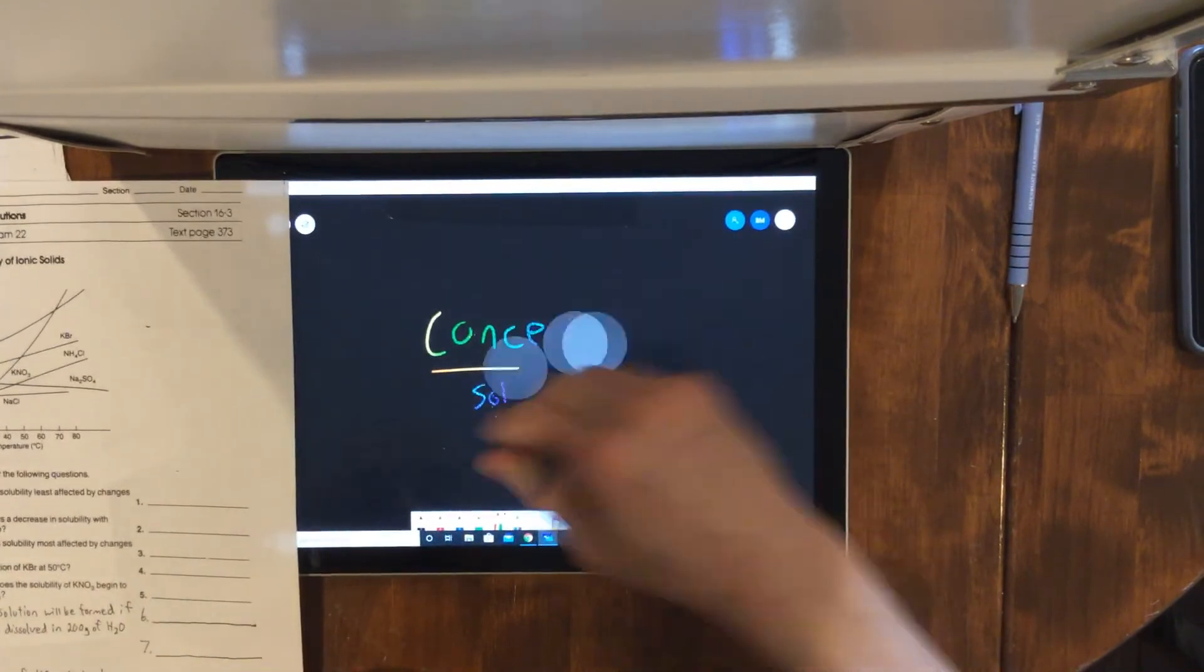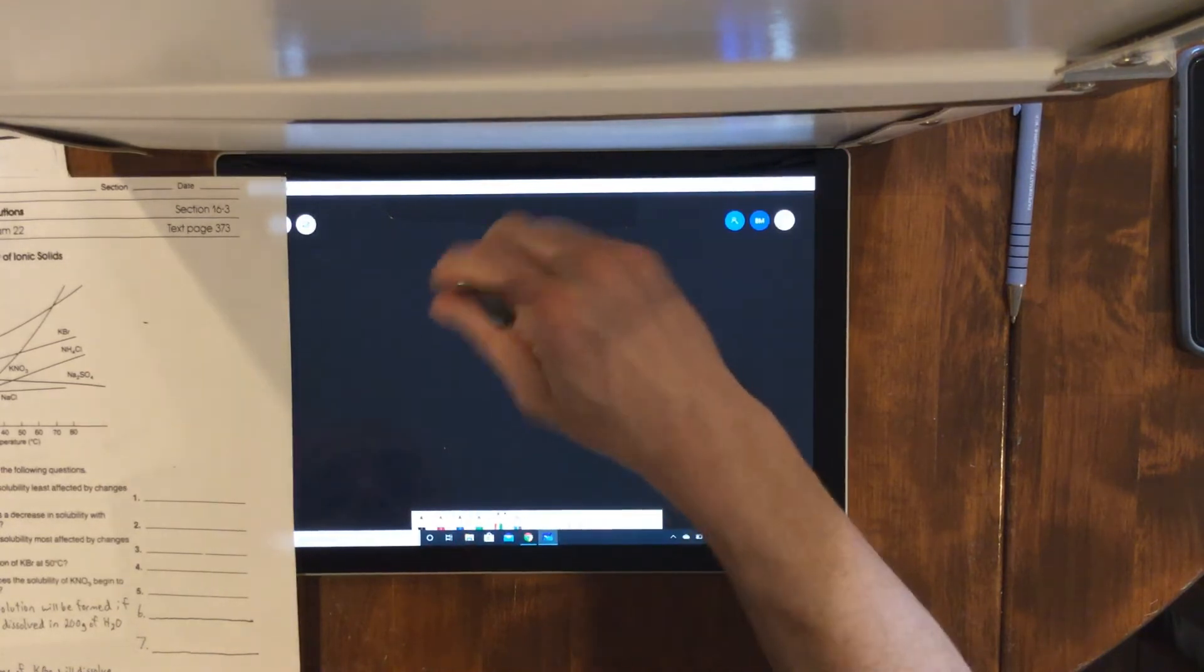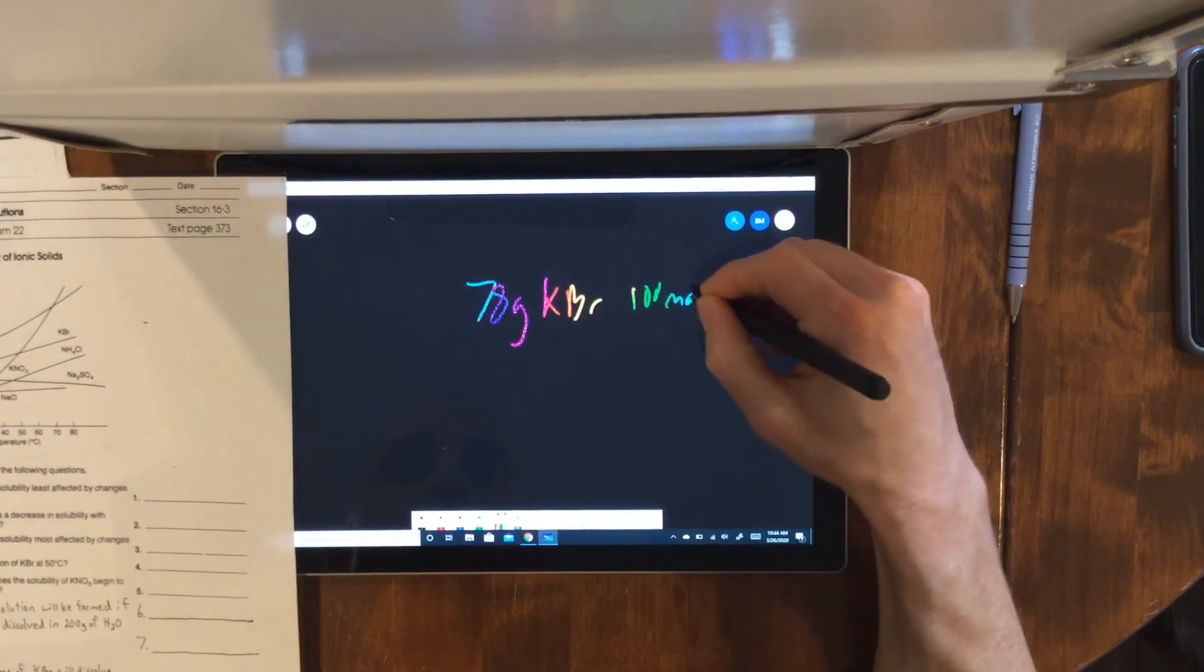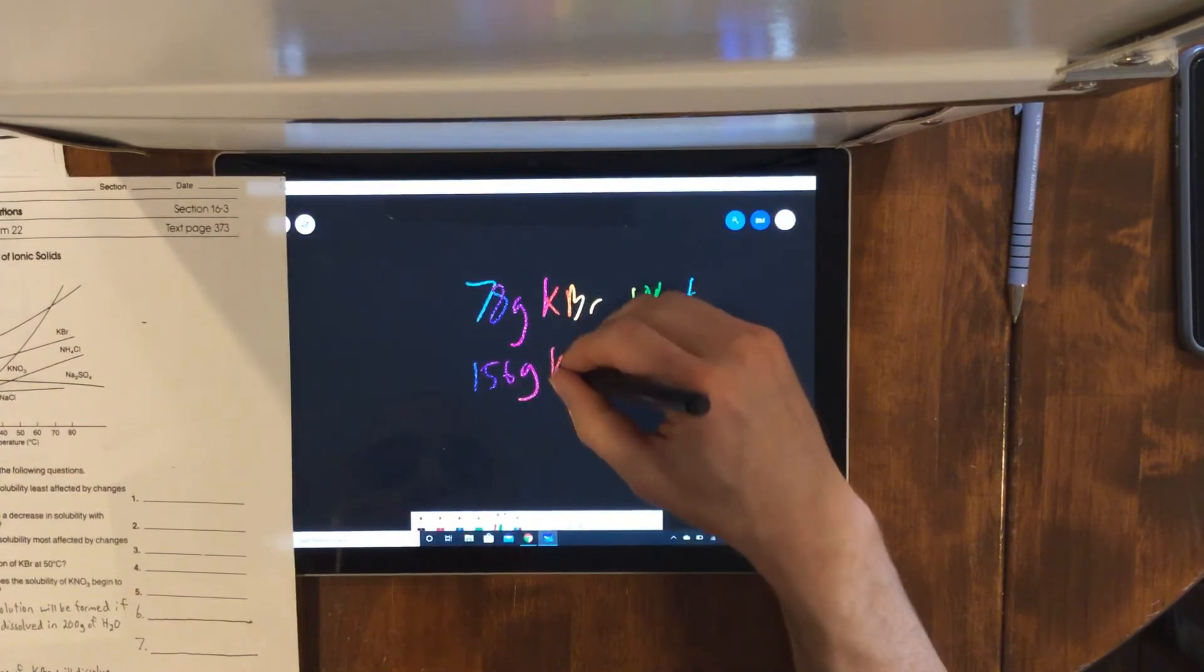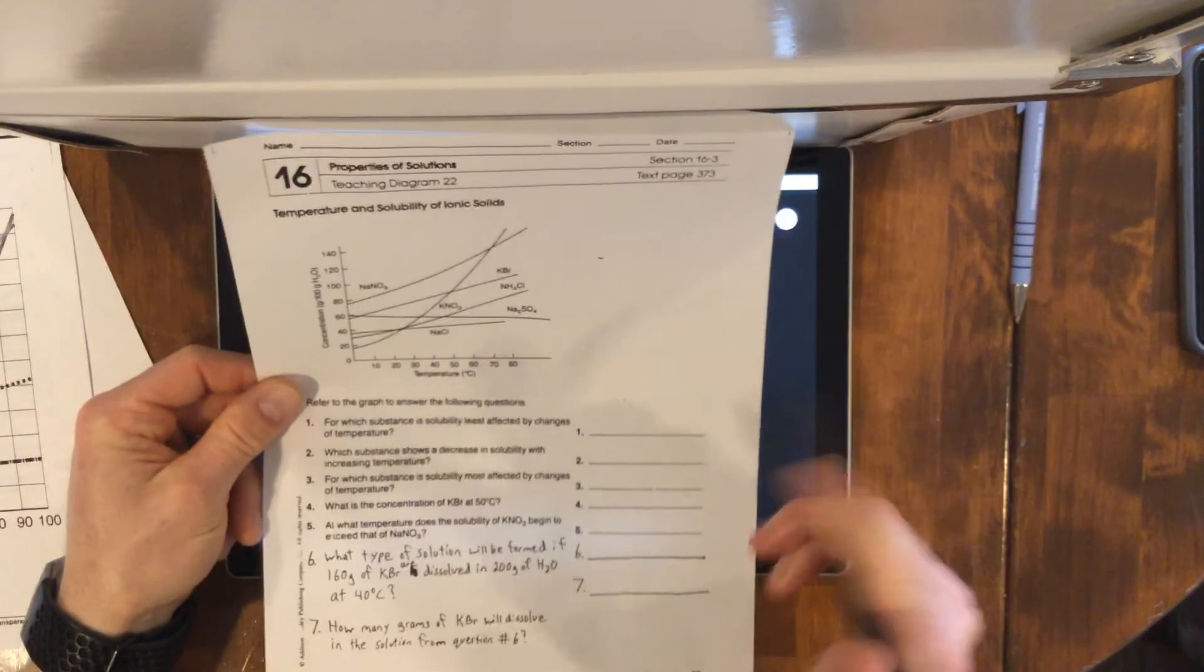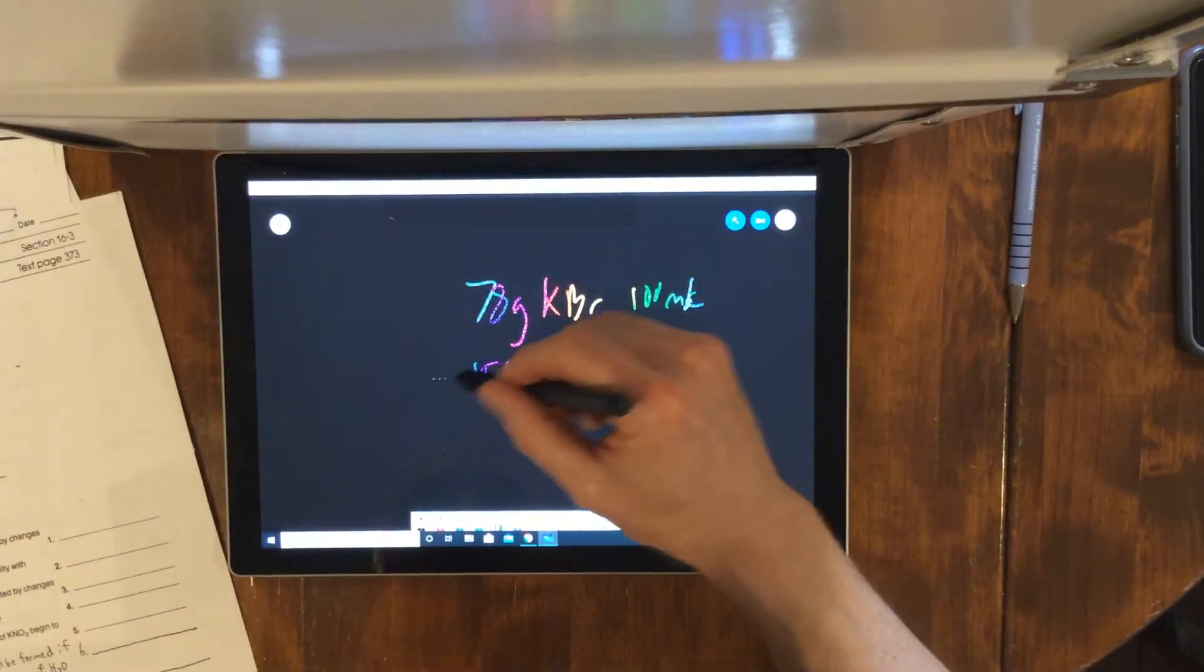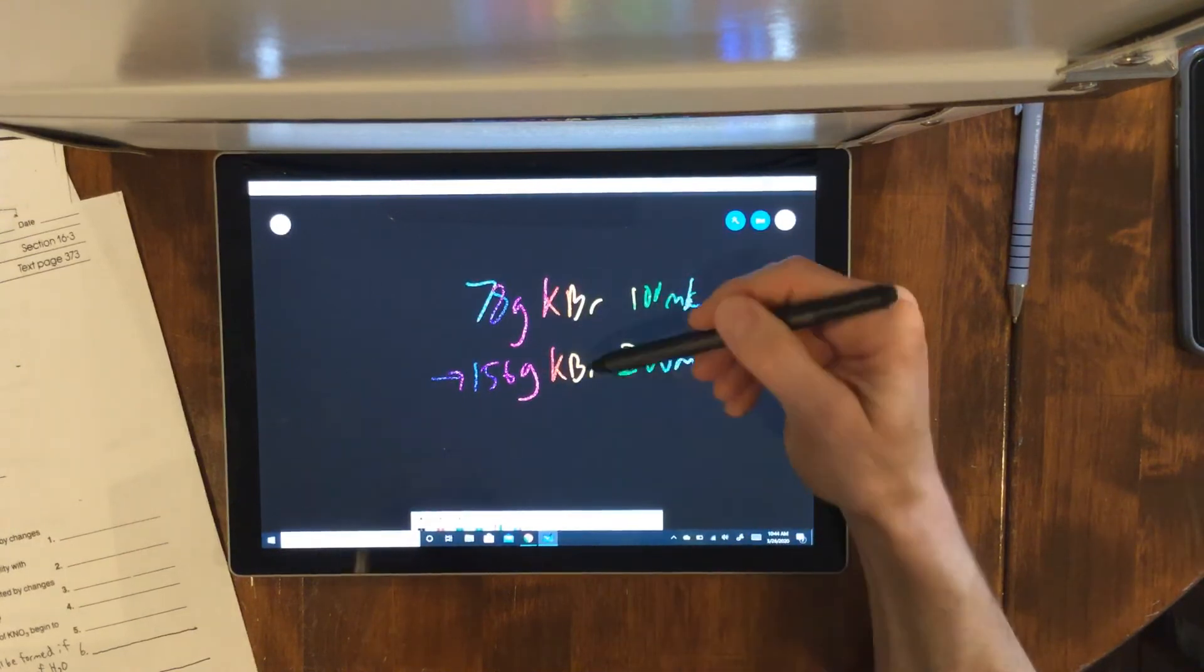If we had 78 grams of KBr in 100 milliliters, if we double that, that's 156 grams of KBr in 200 milliliters. That's this question here. A saturated solution is right here. Anything above that would be supersaturated. So 160 is above that - that's supersaturated.